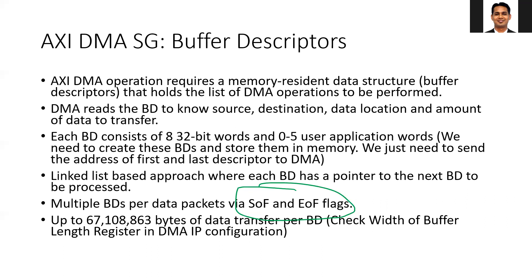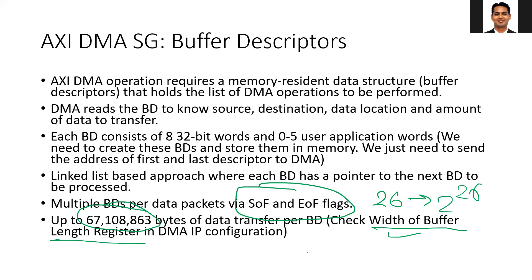Each DMA configuration has a width for the buffer length register, and this width determines how much data can be transferred using a single buffer descriptor. In the current AXI DMA, the maximum length is 26 bits, so the total data transfer using a single buffer descriptor is 2 to the power of 26. Using the AXI DMA IP in Vivado, you can configure this value to any value less than 26. For example, when using the multi-channel DMA, this value is limited to 23, so you need to be careful about this.